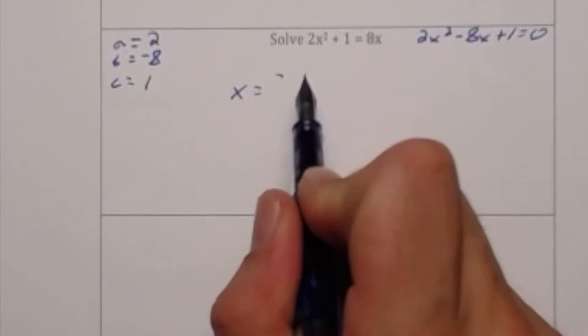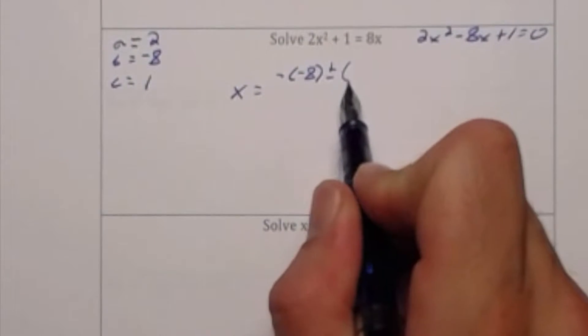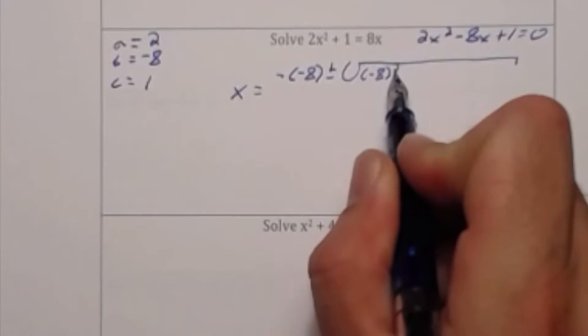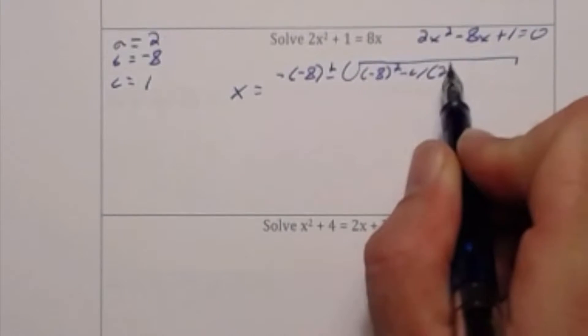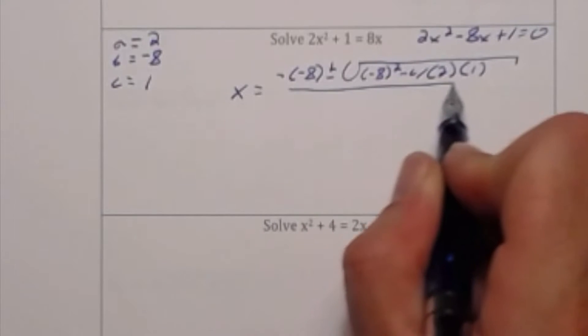Now all I need to do is substitute these values into their appropriate places in the quadratic formula. So that's negative times negative 8 plus or minus the square root of negative 8 squared minus 4 times 2 times 1 all divided by 2 times 2.